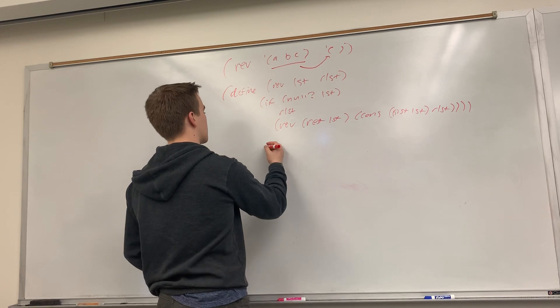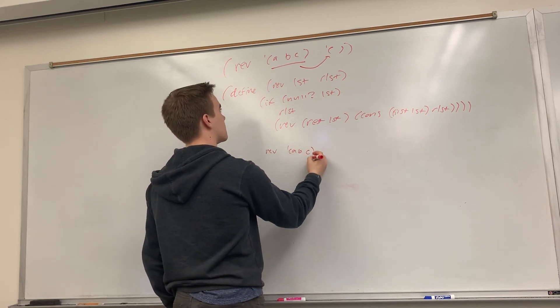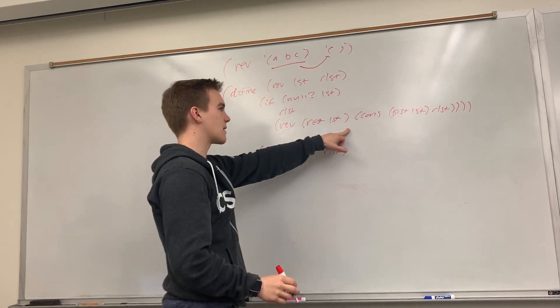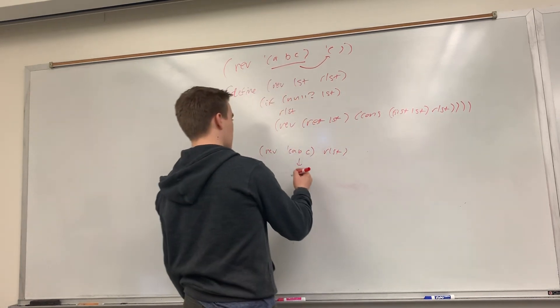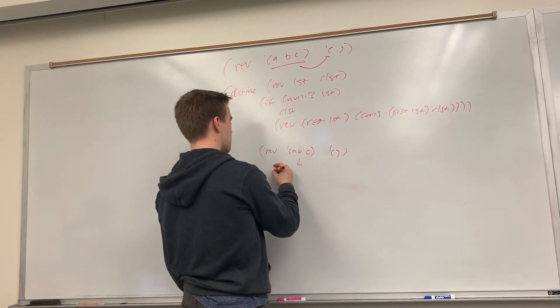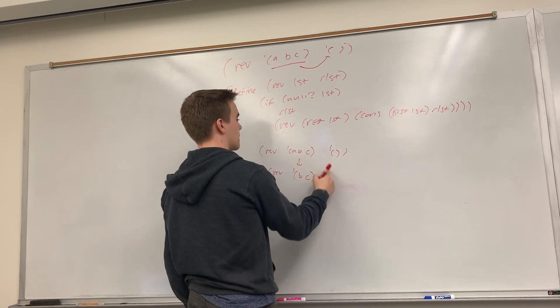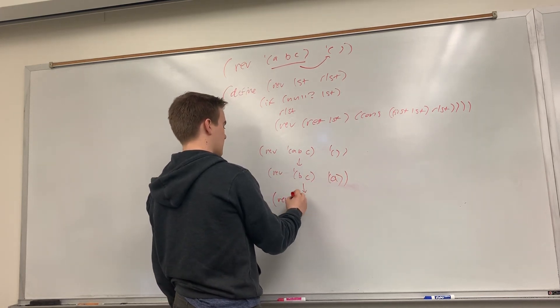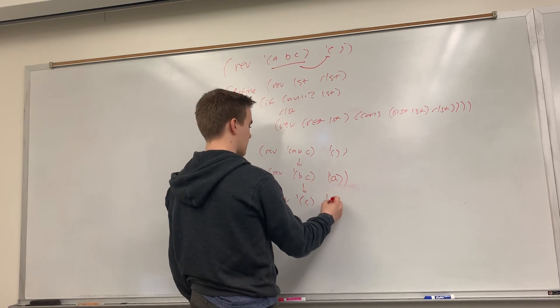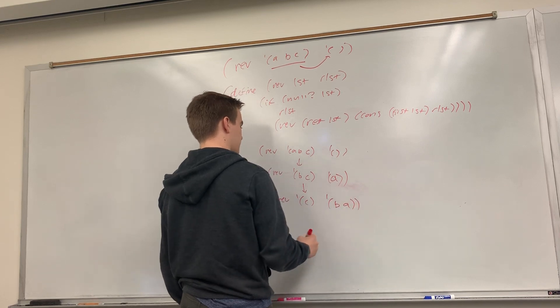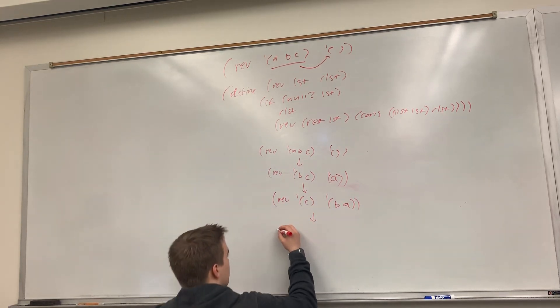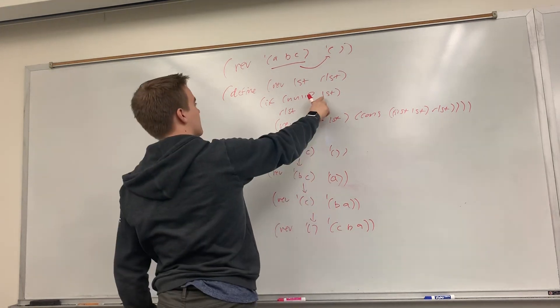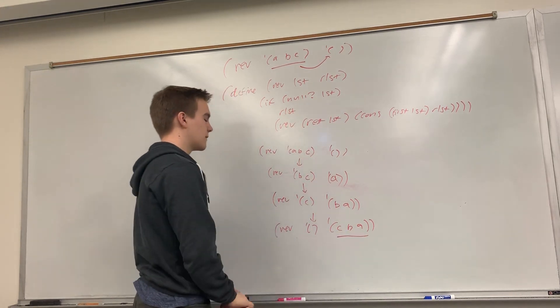So it'll look like our first call is Rev A, B, C, r, list. This we'll call what? So list is not nil yet, so we'll call Rev on the rest of the list, and cons the first of the list to r list. Oh, I should, this is wrong. That's empty. So this we'll call Rev, rest of the list is B, C, and then this will have our A in it. Okay, this will do the same thing again. I'm just following the procedure that they wrote for me here. And then once list is empty, we return our list, so let's just return C, B, A. There's no further recursive call.